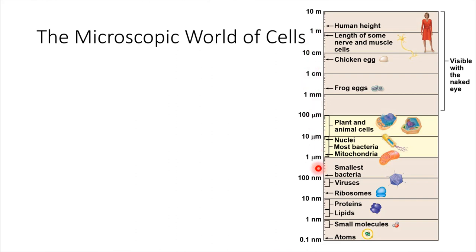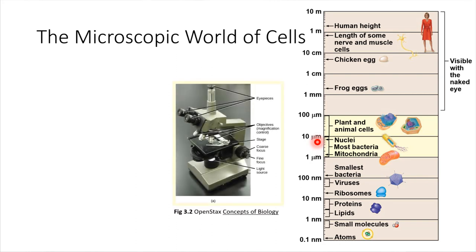Looking at this size scale, most of the cells that we will encounter are microscopic, on the micrometer size range. Micrometers are tiny. They are microscopic, which means we need a microscope in order to study most things that go on in cells.